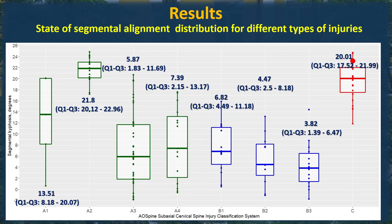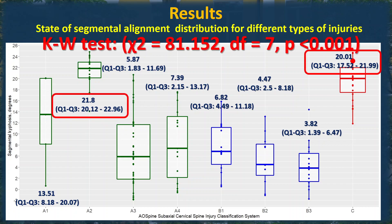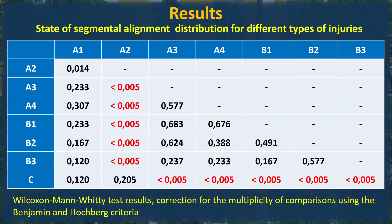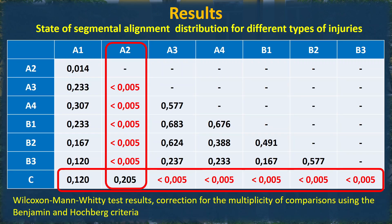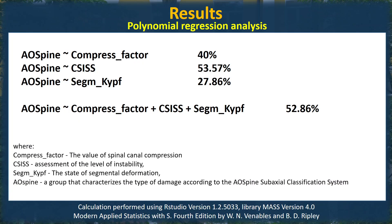For the state of segmental alignment, the highest values are registered for types A2 and C. Wilcoxon-Mann-Whitney test results show that segmental kyphosis for only these two types differs from the rest.